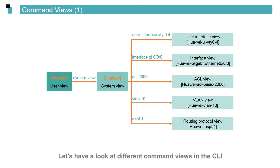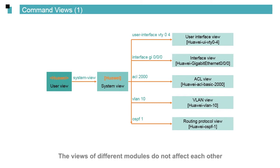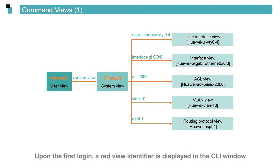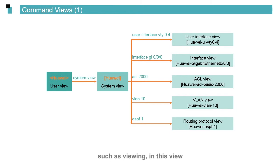Let's have a look at different command views in the CLI. To run the command for a specific device module, enter the corresponding view. Views make the CLI window more hierarchical. The views of different modules do not affect each other. Upon the first login, a view identifier is displayed in the CLI window, indicating that you have entered the user view. You can perform only simple operations, such as viewing, in this view.